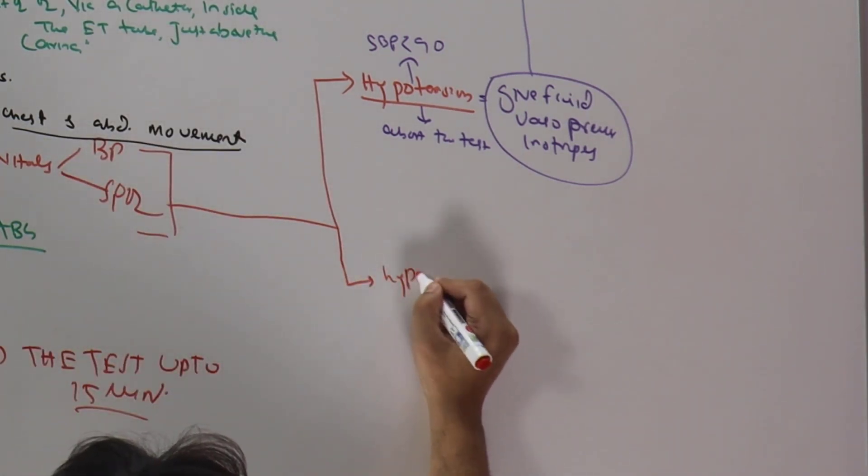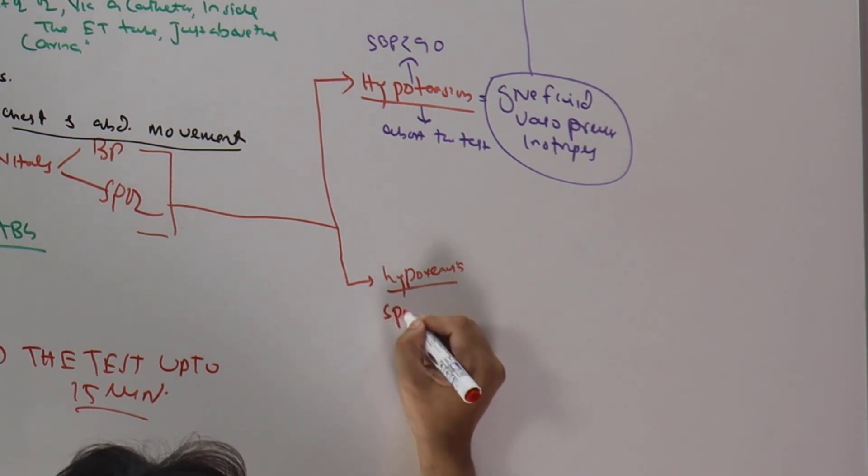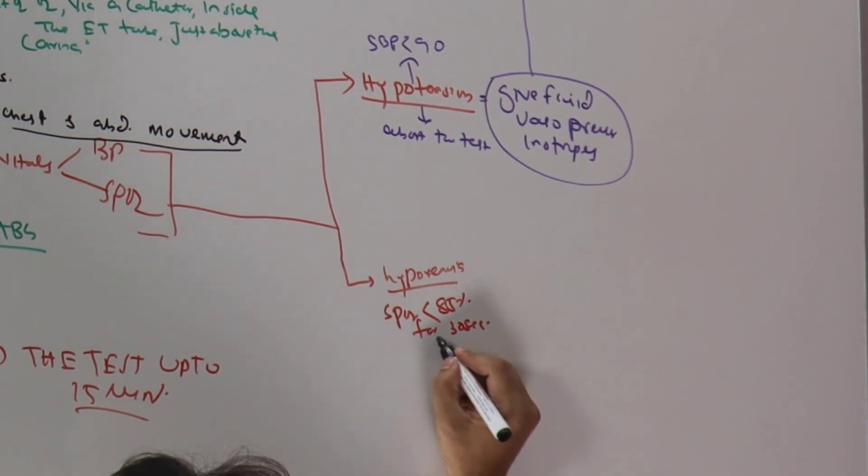Then there can be hypoxemia. By definition, it is SpO2 less than 85% for 30 seconds. If it is there, we have to abort the test.